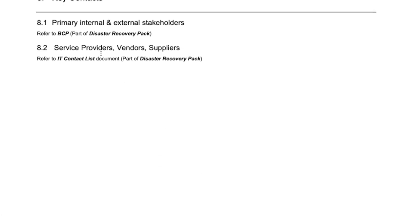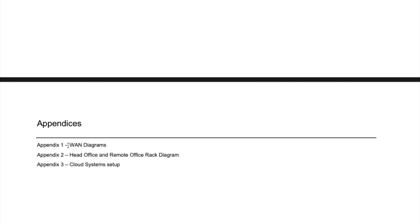Include a list of all key contacts that are relevant — generally this will also be in the BCP, and an IT contact list document could be part of the pack too, including specific service providers, vendors, and suppliers. Then there are some appendices. Include further information such as WAN diagrams so you know exactly how to build things up — the IPs, links, tunnels, speed of your links. Also rack diagrams for the head office and remote racks, your cloud system setups, anything technical that gives a good snapshot of the technical setup for all your environments.